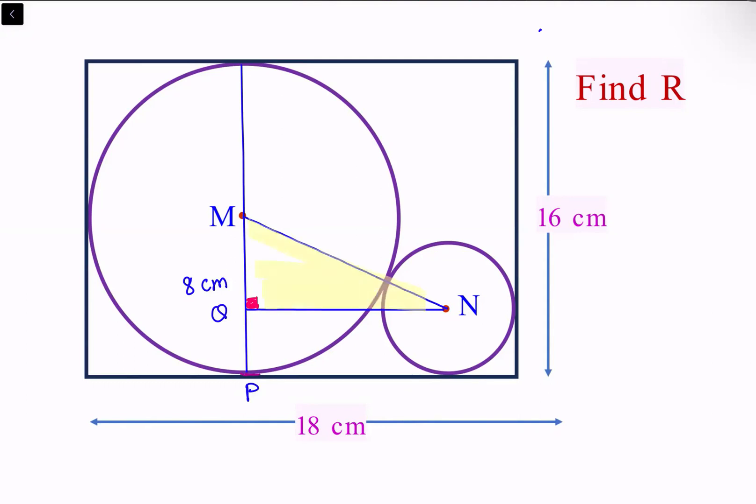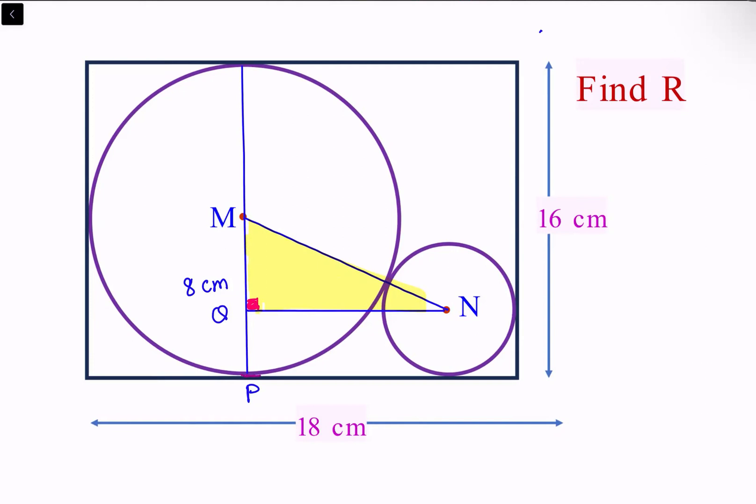For the smaller circle, we'll assume that the radius is R. So this length is R, and this R is what we have to find. Let's see if we can work this out.